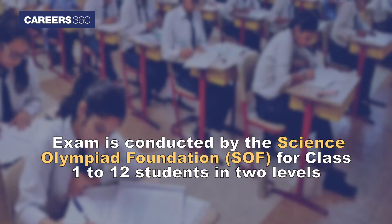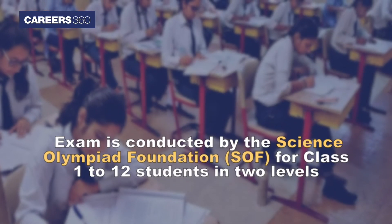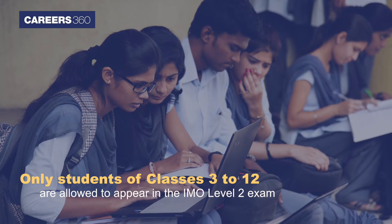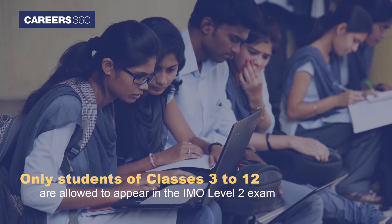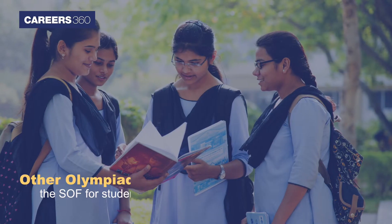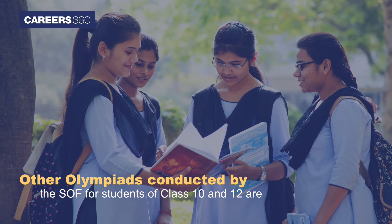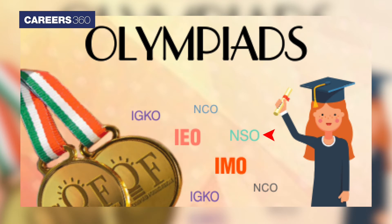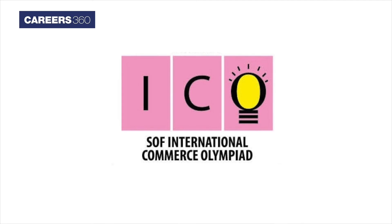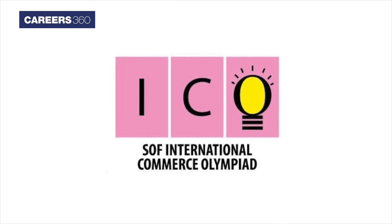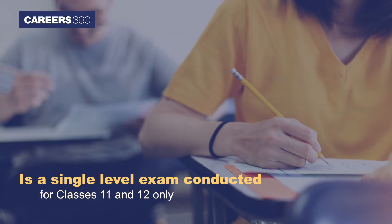IMO is conducted for class 1 to 12 students in two levels; only students of classes 3 to 12 are allowed to appear in the IMO Level 2 exam. Other olympiads conducted by SOF for students of class 10 and 12 are IEO and NSO, while the IGKO or International General Knowledge Olympiad is conducted for classes 1 to 10, and ICO or International Commerce Olympiad is a single-level exam conducted for classes 11 and 12 only.